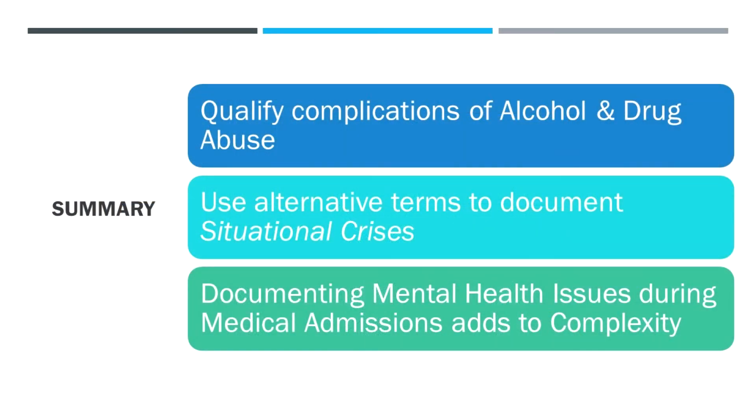To summarize what we've gone through today: we want to qualify and quantify the complications of alcohol and drug abuse in our documentation using the terminology we've discussed. We want to use alternative terms to document situational crises — thinking about acute stress reactions, acute stress disorder, or an exacerbation of the mental health condition. If we have medical admissions and document mental health issues that arise or worsen and require management during that admission, that adds significant complexity. It's stuff that's probably happening a lot already but we're under-reporting it — and perhaps even under-treating it. This is a way we can increase recognition and get better support to look after our patients. Thanks for listening.